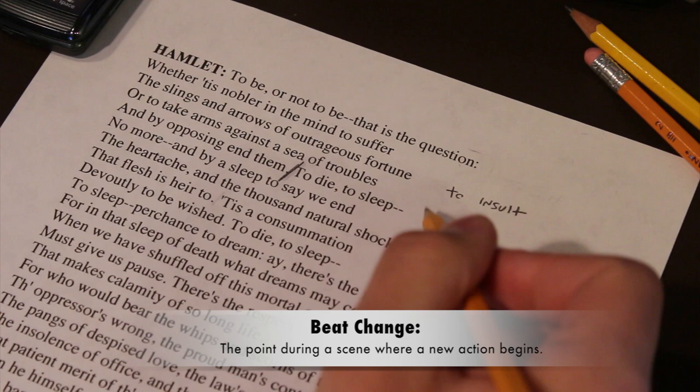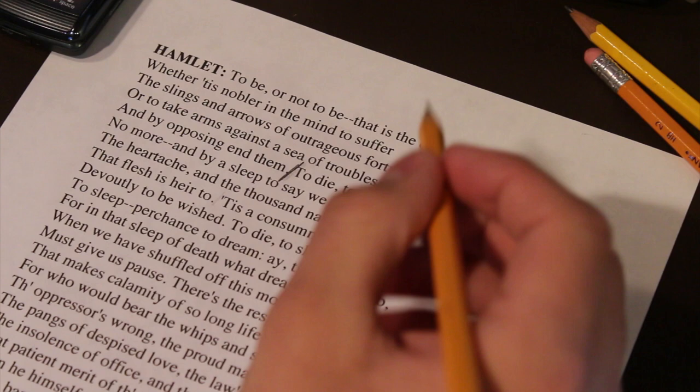And usually when a beat changes, you change tactic. And what a tactic is, let's say that in this run through, I want to be like, okay, when I say to be or not to be, I want to insult whoever I'm talking to. And usually, if it's a soliloquy, no one's around. But that's usually just in Shakespeare. But in most monologues, you're talking to someone else, or you want to believe that you're talking to someone else.